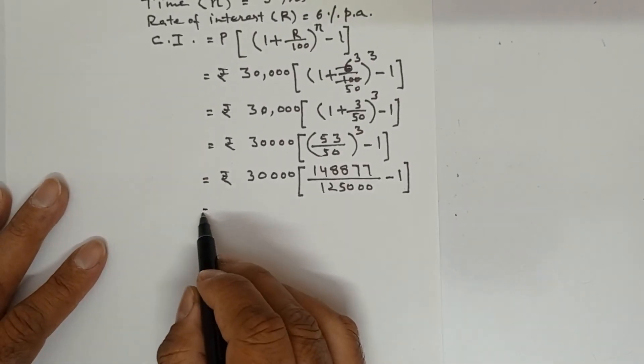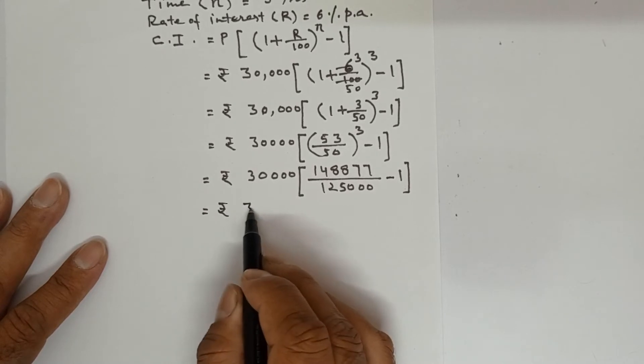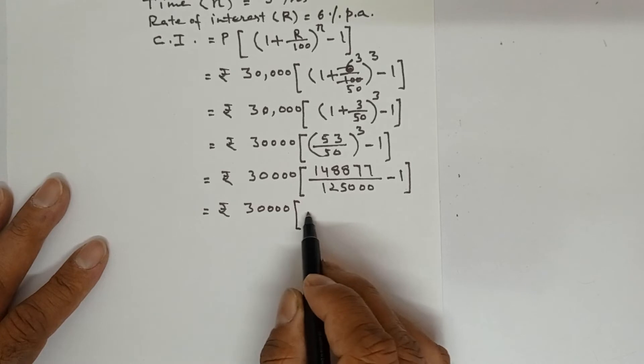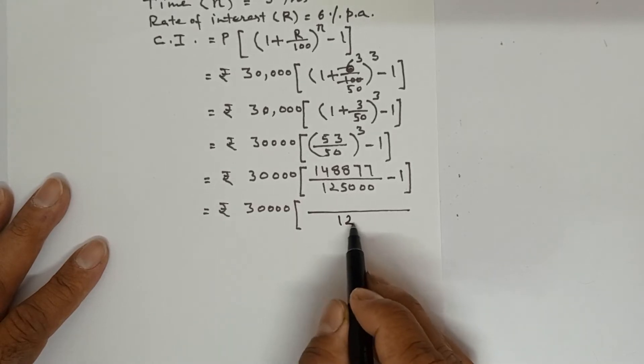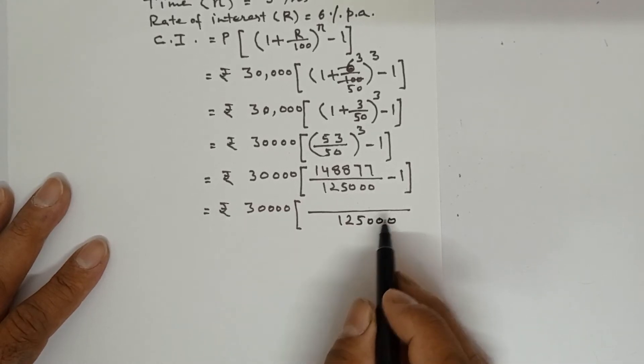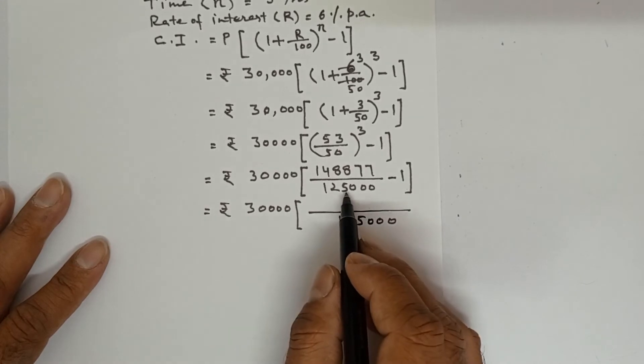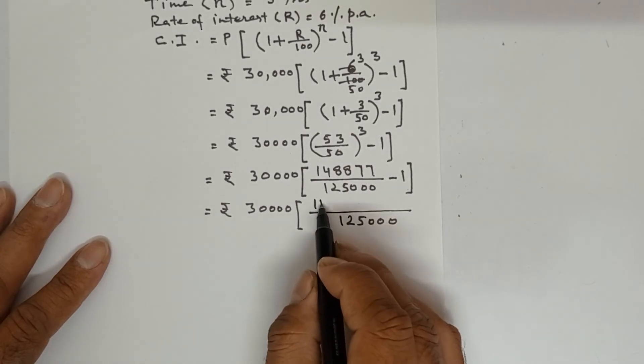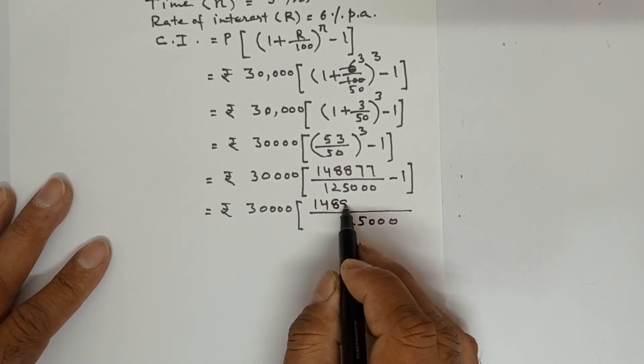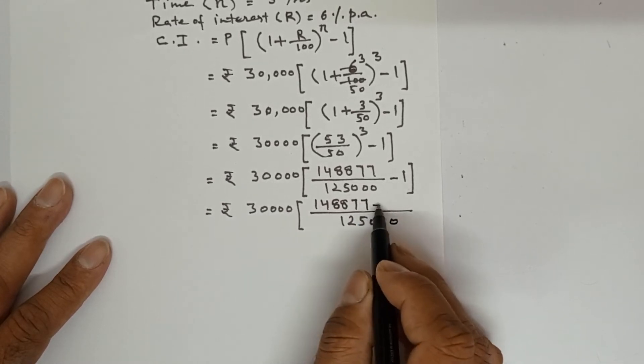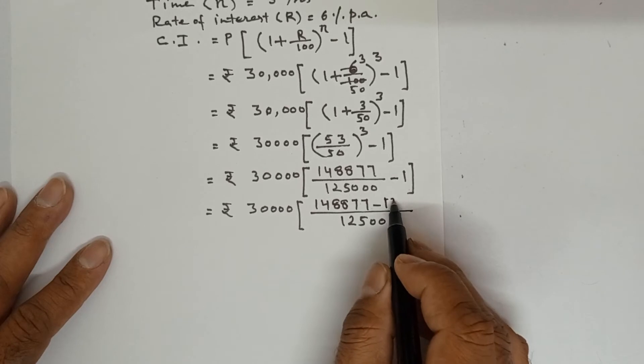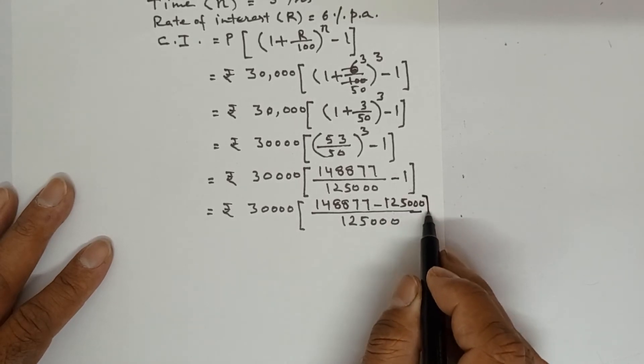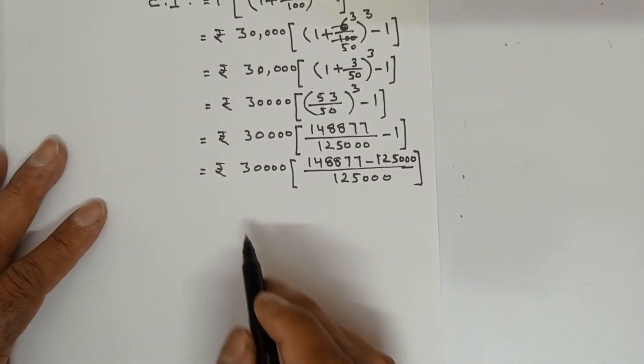Now calculate further Rs. 30,000 in the square bracket, LCM is 125,000. 125,000 divided by 125,000 is 1, 1 into this number. So it will remain the same. Minus, this 125,000 will come here.